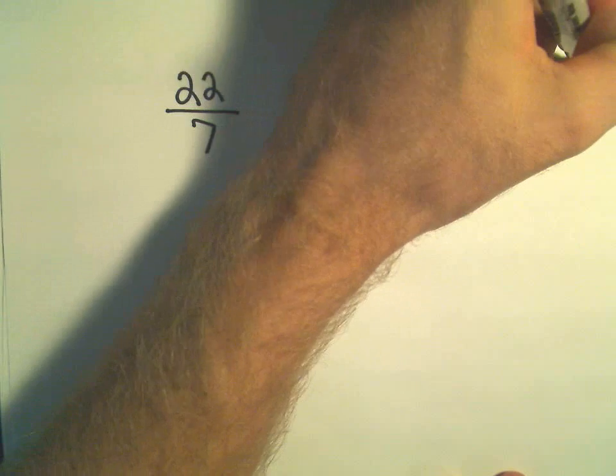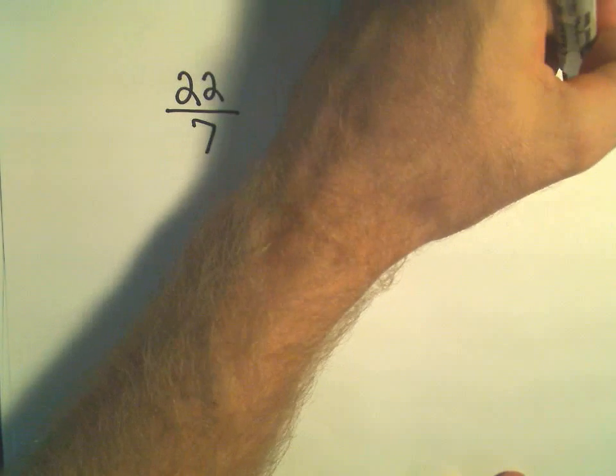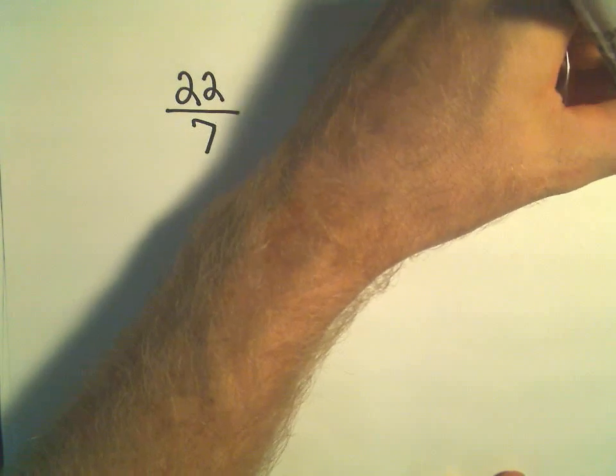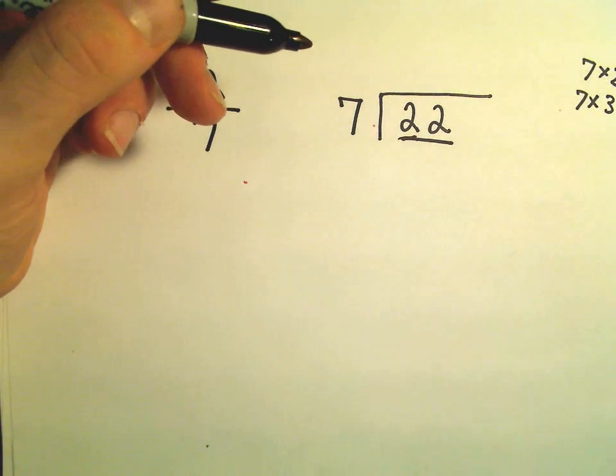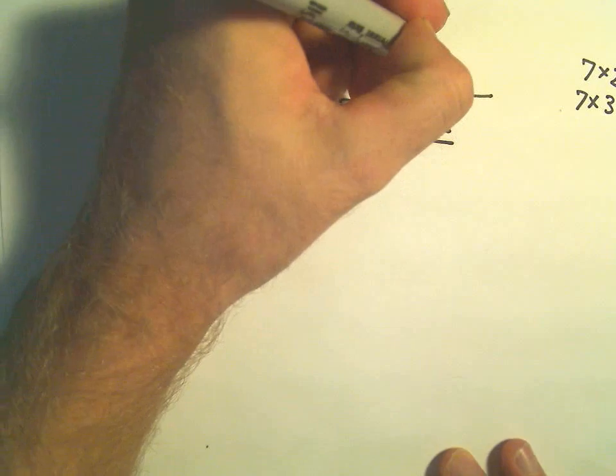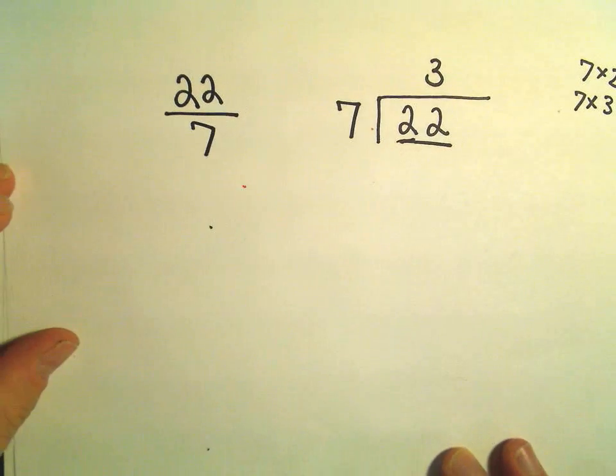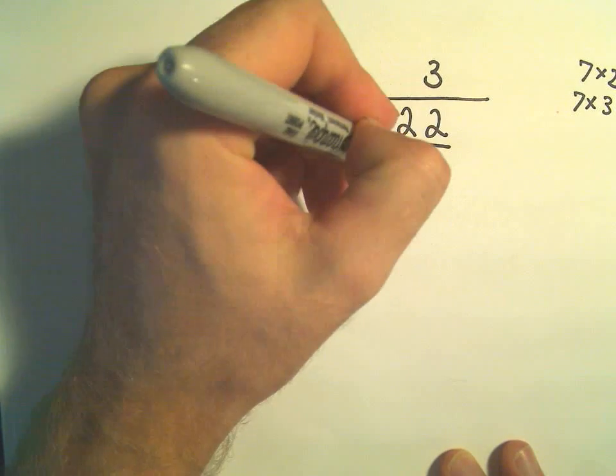So let's see, seven times two is fourteen, seven times three is twenty-one. Certainly if we use seven times four, that'll be too big. So seven will go into twenty-two three times.